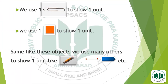For example, we use one paper clip to show one unit. We use one square box to show one unit. Same like these objects, we use many others to show one unit — like a pencil, an arrow, and many other shapes.